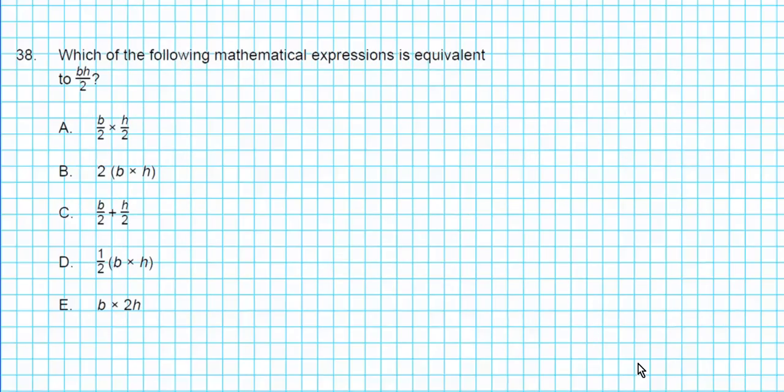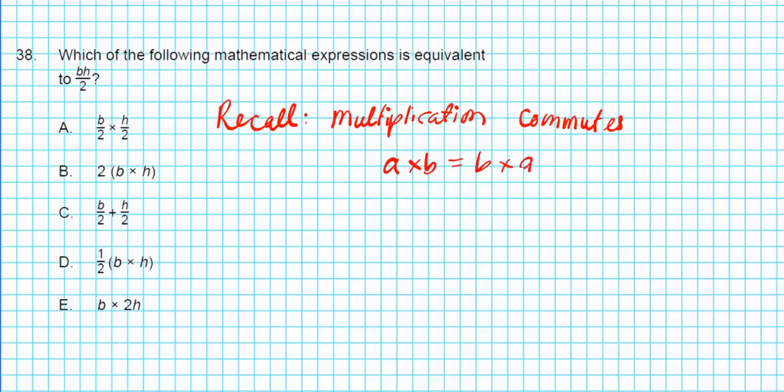Let's take a look at question thirty eight. It says which of the following mathematical expressions is equivalent to base times height over two. One thing you want to recall is that it doesn't matter the order that you multiply, you get the same thing. A times B is equal to B times A.